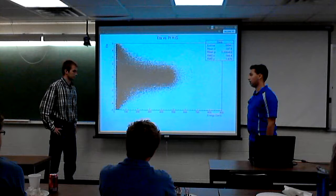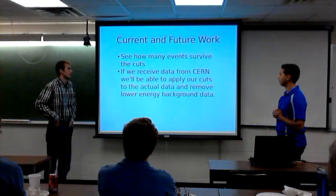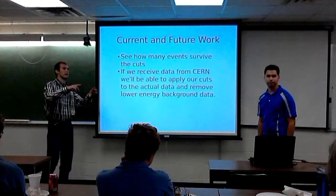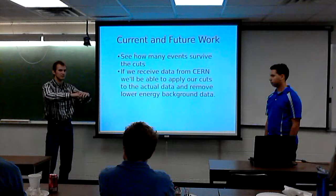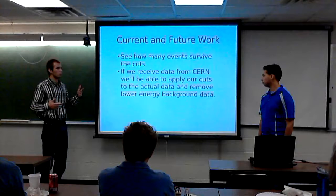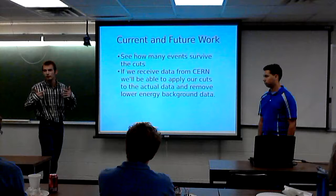Our job was to take the TT-bar data and subtract it from the T prime data. We didn't quite get that part done because we ran out of time, but we're planning on doing that over the school year. Right now our future work is to see how many events survive all the cuts we applied — we'll run all our macros on the data and track how many events survive each successive cut. After applying all cuts we'll have the surviving events to look for T prime. We're currently using just generated data, but we're hoping to receive and work on actual data from CERN, so we can apply our cuts and actually search for T prime.